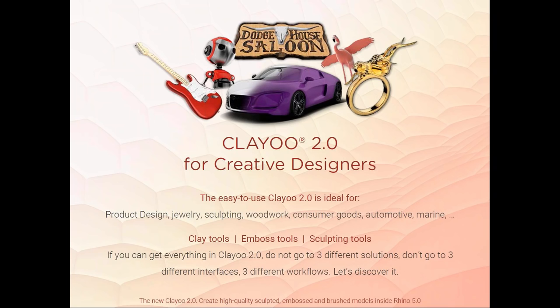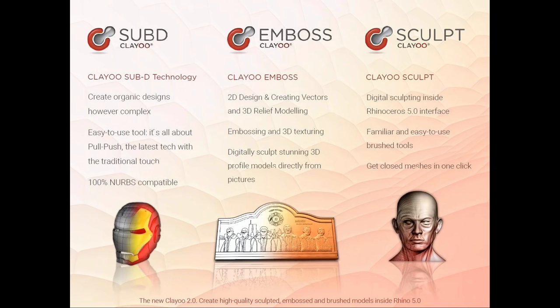For those familiar with ClayU 1 and other free-form solutions in Rhino that use SubD technology — ClayU 2 has SubDivision technology, but also Emboss and Sculpting. This is the only software inside Rhinoceros that allows you to SubD, Emboss, and Sculpt inside the same Rhino interface. We realized there was no solution for that inside Rhino, and the Rhinoceros community deserves a solution like this. That's why we came out with ClayU 2.